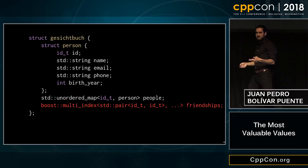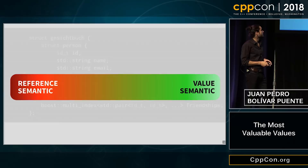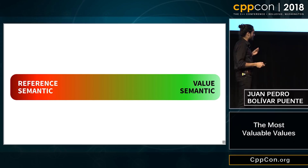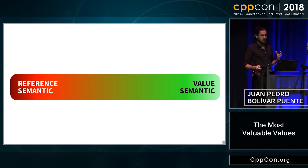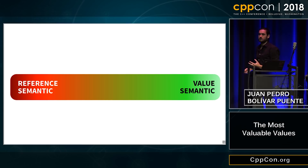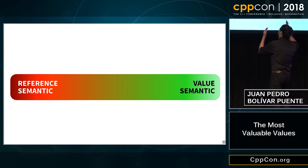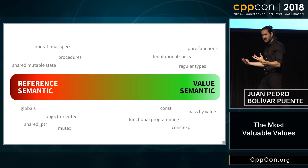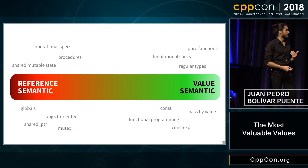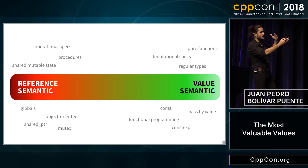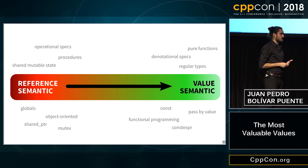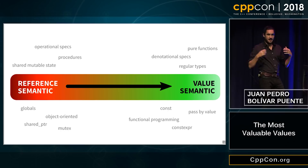What this shows is that I think there is actually a continuum in C++ specifically: on one extreme we have very reference-semantic code — code that really requires understanding the objects, the pointers, the references. On the other extreme, we have tools that allow us to do more declarative, denotative thinking, value-based thinking, functional programming. The good news is that you can always start with a more reference-semantic API and wrap it in something that becomes value semantic through the means of abstraction.